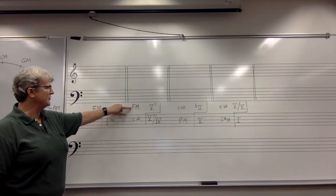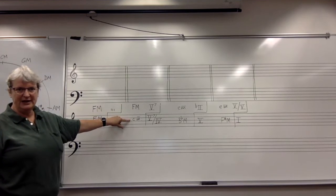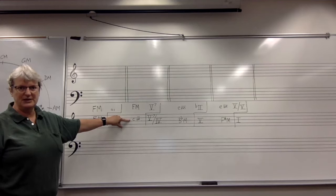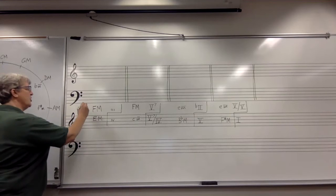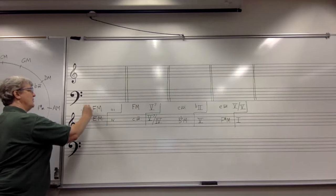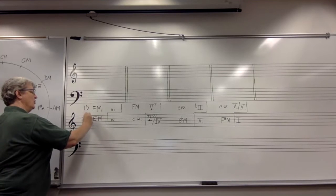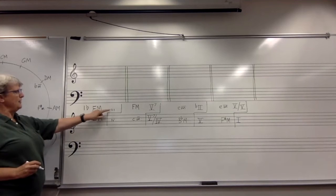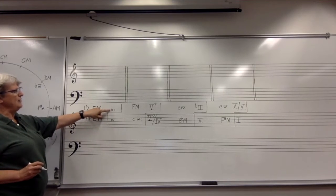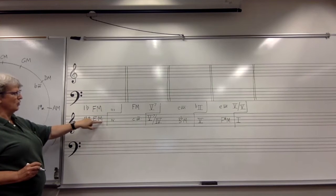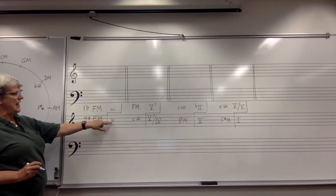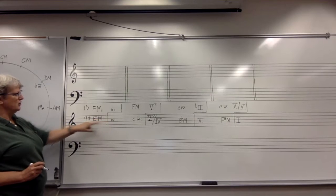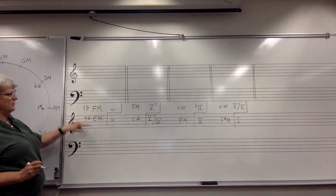C minor is not so distantly related to F major — C minor has three flats in the key signature — but we still consider it to be not closely related. To modulate from F major to E major, from a key with one flat to a key with four sharps, I picked a chord which is diatonic in F major but equivalent in E major. Because E major has a lot of sharps, its equivalent has to be a mode mixture chord in E major — we're going to use mode mixture to substitute naturals for some of those sharps.